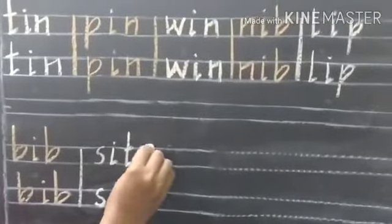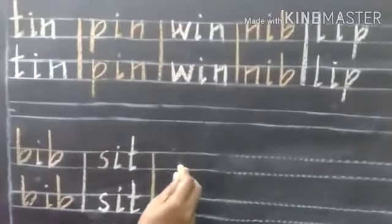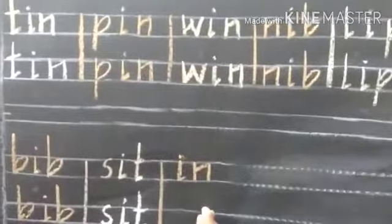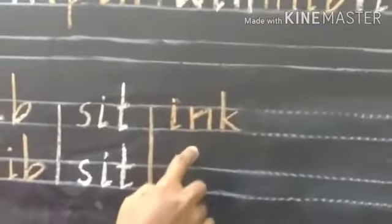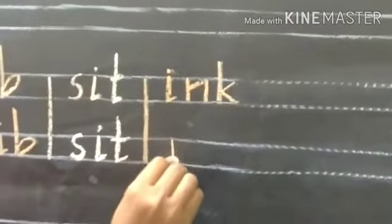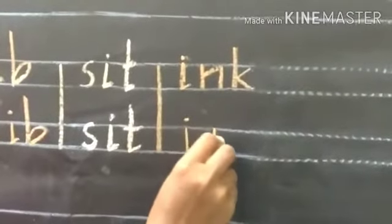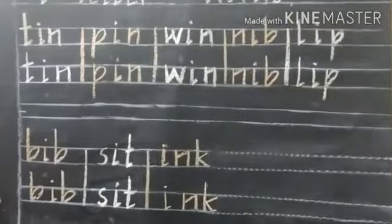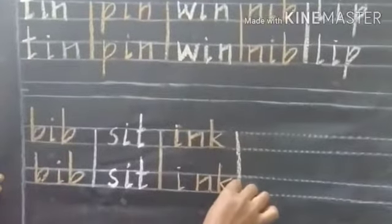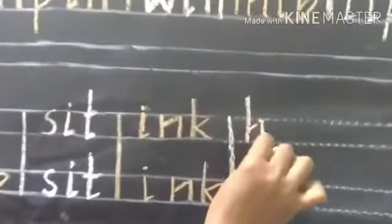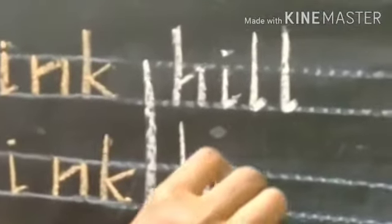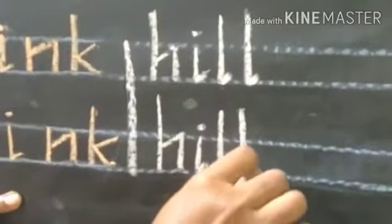Next word is ink. I-N-K, ink. Write once again. I-N-K, ink. Now we are going to write hill. H-I-L-L, hill. Write once again, children. H-I-L-L, hill.